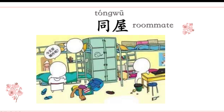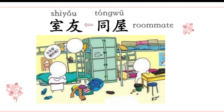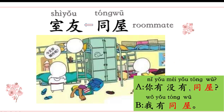同屋 is an old-fashioned word for roommate. Nowadays we usually say 室友. But in today's dialogue we still use 同屋 because it is from old teaching material. 友 means friend — a friend who lives in the shared room. So you can ask: 你有没有同屋? — Do you have a roommate or not? Answer: 我有，我有同屋.